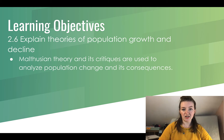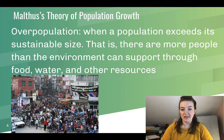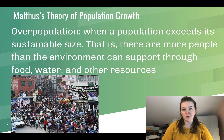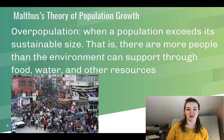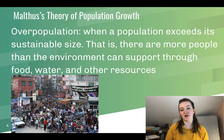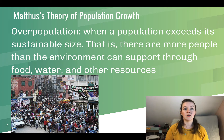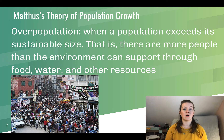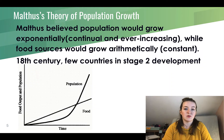We're particularly looking at Malthusian theory, neo-Malthusian theory, and their critiques. Thomas Malthus was an 18th century economist from Britain. The first thing we'll look at is overpopulation — he coined the term, which is when a population exceeds its sustainable size, meaning there are more people than the environment can support through food, water, and other resources. The world has not yet become overpopulated; some regions are more affected than others, and it's largely about how we allocate resources.